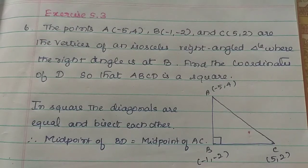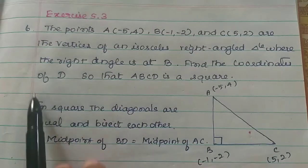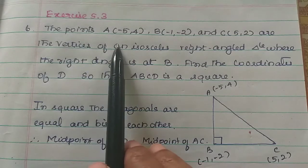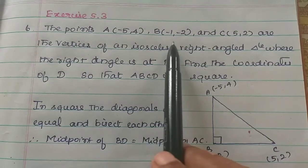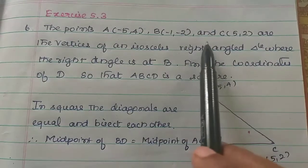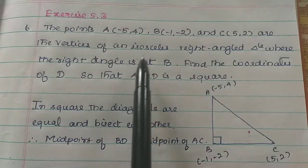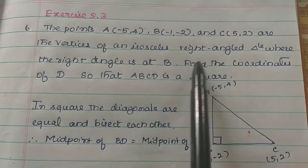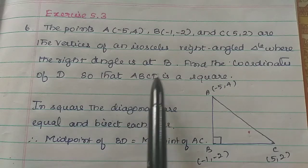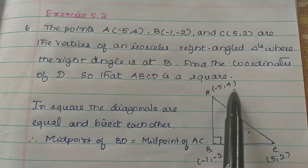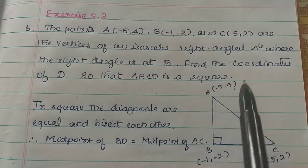Hi students. In this video we have to look at exercise 5.3. The points A(-5, 4), B(-1, -2) and C(5, 2) are the vertices of an isosceles right angle triangle where the right angle is at B. Find the coordinates of D so that ABCD is a square.